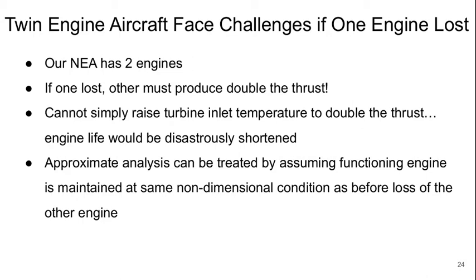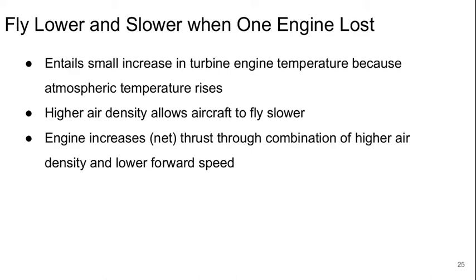This is pretty challenging for two-engine aircraft, like our new efficient aircraft we're designing engines for. If one is lost, you need to have one of the engines produce two times as much thrust. We can't simply raise the turbine inlet temperature to double the thrust. The engine life would be dramatically shortened and would probably only last a few minutes. Instead, we can use an approximate analysis. We treat this by assuming that the functioning engine is maintained at exactly the same non-dimensional condition as before loss of the other engine. We have to fly lower and slower when one engine is lost.